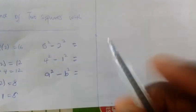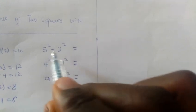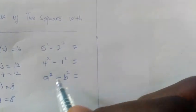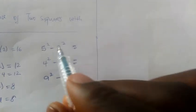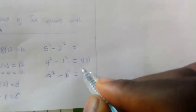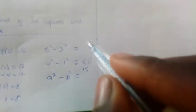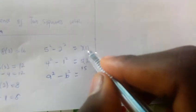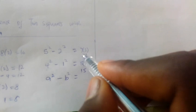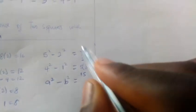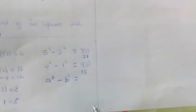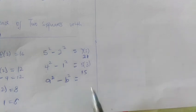For the second set, the difference here is 3. Let's substitute for these. Since the difference is 3, for 4 squared minus 1 squared: 4 plus 1 is 5, then 5 times 3 gives 15. You can prove it. For 5 squared minus 2 squared: 5 plus 2 is 7, then 7 times 3 gives 21. So 21 is the answer for 5 squared minus 2 squared, and 15 is the answer for 4 squared minus 1 squared.